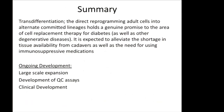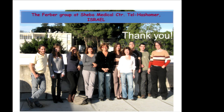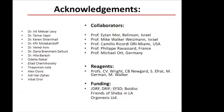To summarize: transdifferentiation — the direct reprogramming of adult cells into alternate committed lineages — holds genuine promise for cell replacement therapy in diabetes as well as other degenerative diseases. It is expected to alleviate the shortage of tissue from cadaveric donors and the need for immunosuppressive medication. Ongoing development challenges are huge, concentrating on large-scale expansion, development of QC assays, clinical development, and so on. Thank you for listening.